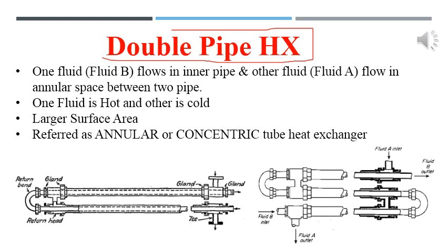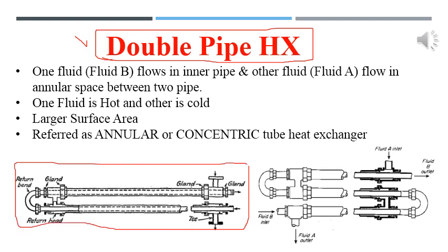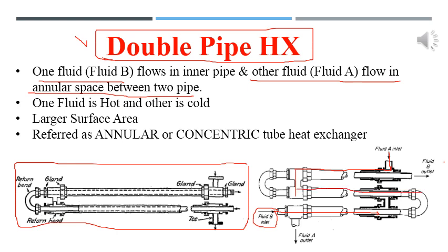The double pipe heat exchanger consists of one fluid — fluid B — passing through the inner pipe, while fluid A flows in the annular space between the two pipes. As the fluid flows, it moves through each leg of the heat exchanger. The bends connecting the legs do not provide heat transfer area and are not included in calculations.